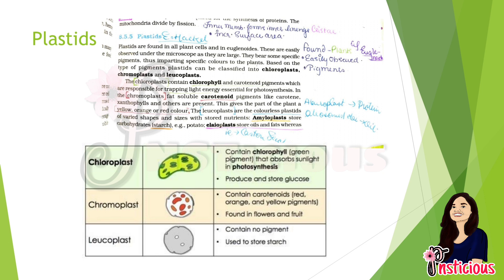There are also colorless plastids called leucoplasts, which are divided into different types: amyloplasts, oleoplasts, and aleuroplasts. Aleuroplasts are the storehouse of proteins. Oleoplasts store oils, for example in castor seeds. Amyloplasts store carbohydrates or starch, as in potatoes. Remember these three types along with their examples, as they are directly asked in question papers.